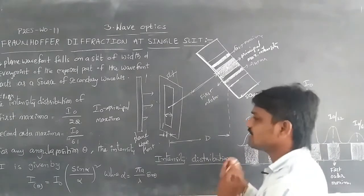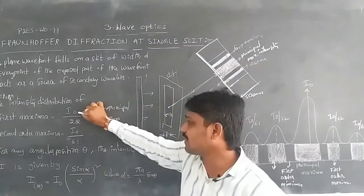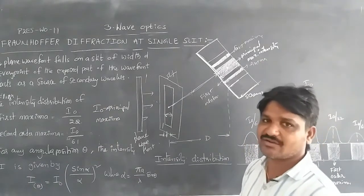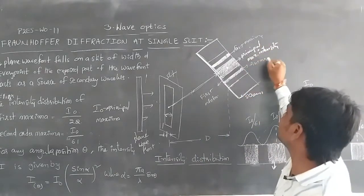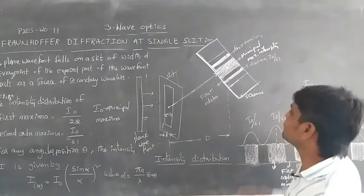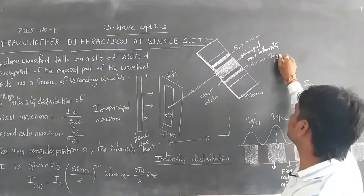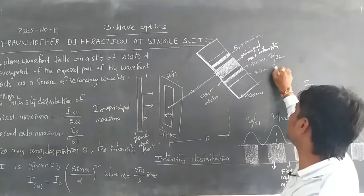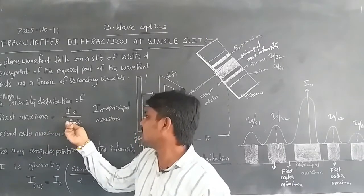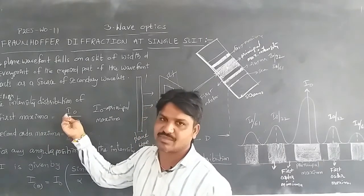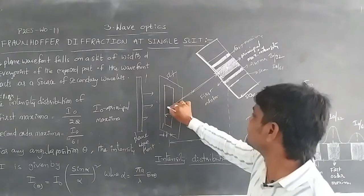The intensity values are distributed such that the first order maxima has intensity I₀/22, and the second order maxima has intensity I₀/61, according to practical values. The principal maximum has the highest intensity I₀.